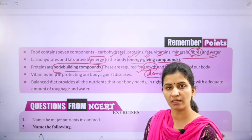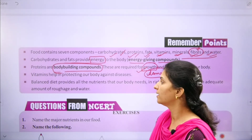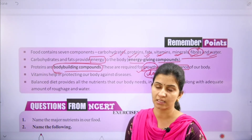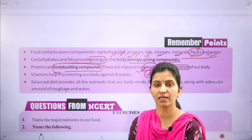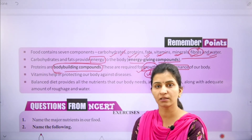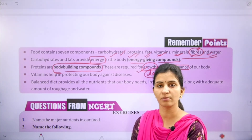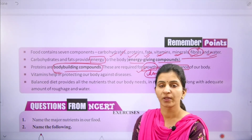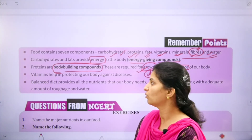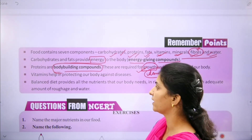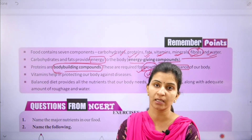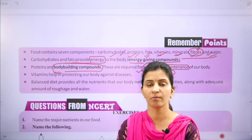Soybean is the richest source of protein. Vitamins help in protecting our body against diseases. Vitamin A prevents night blindness, vitamin B helps with nervous disorders, vitamin C helps with teeth and gum health from citrus fruits, and vitamin D helps keep bones healthy from milk products. Vitamins should be consumed in a balanced amount.